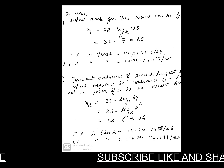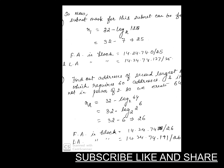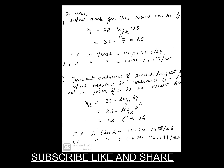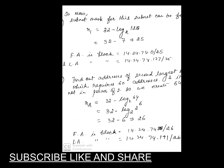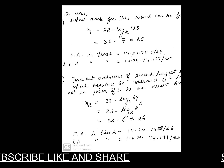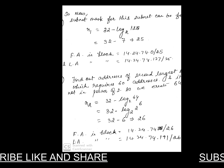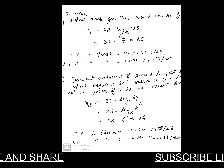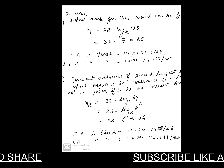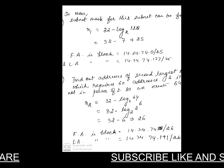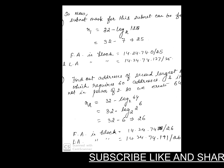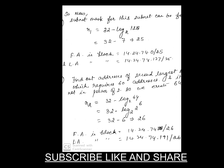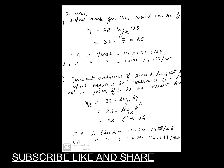For the second subnet with n=26, we focus on the first address. The second block starts at 128 — right after where the first block ended at 127. So the first address of this subnet begins at 14.24.74.128 with /26.